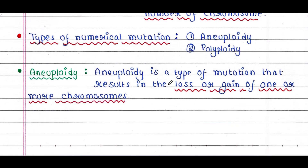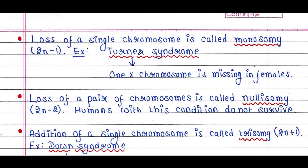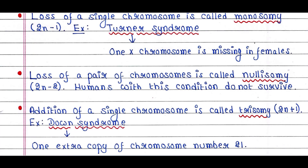Aneuploidy is a type of mutation that results in the loss or gain of one or more chromosomes. Loss of a single chromosome is called monosomy, represented as 2n−1. An example of monosomy is Turner syndrome, where one X chromosome is missing in females, meaning females have 45 chromosomes. Loss of a pair of chromosomes is called nullisomy, represented as 2n−2. Humans with this condition do not survive.